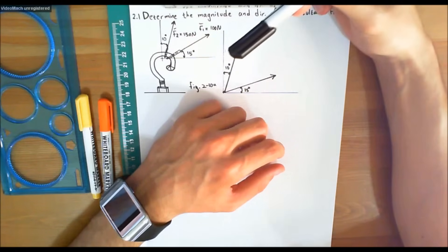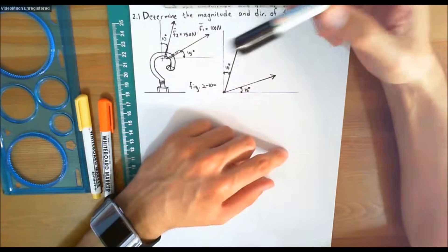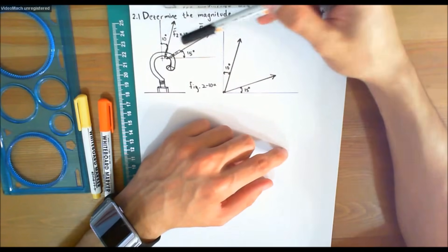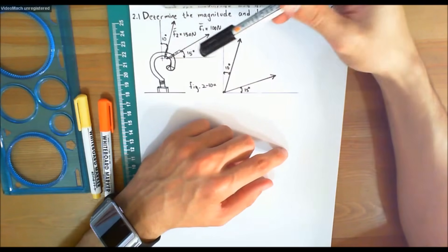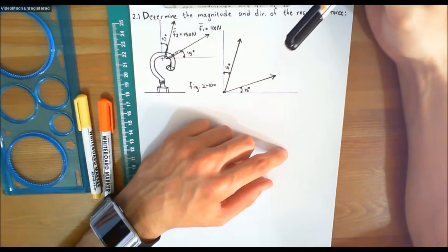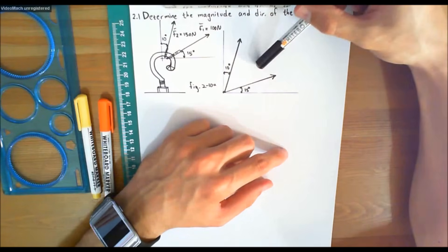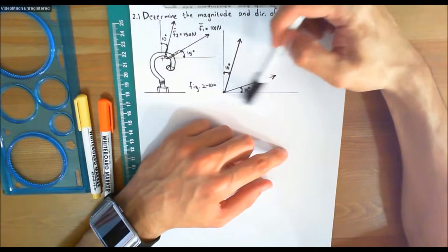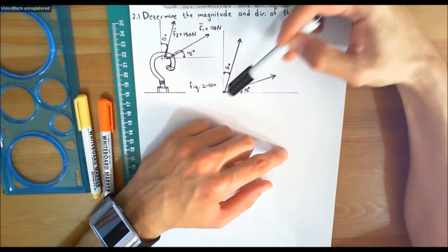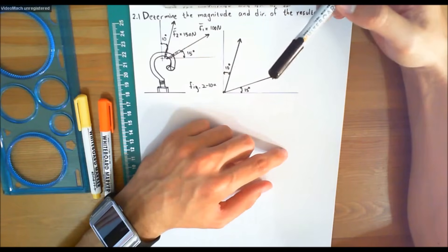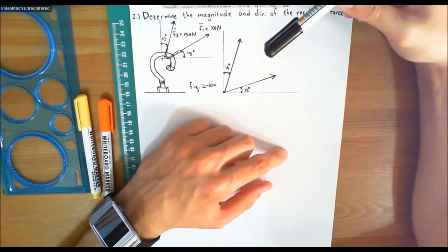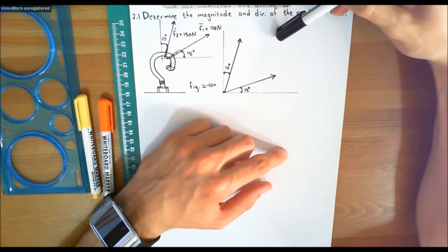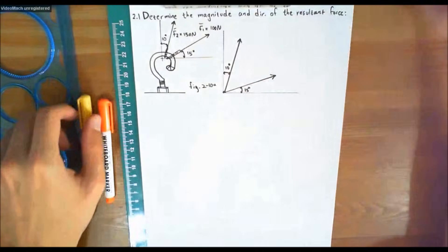Let's start off by using the procedure for analysis. The first step would be to look at the problem and understand the question — he wants us to determine the forces F1 and F2, and to determine the magnitude and direction of the resultant force. The first step in the procedure for analysis is to make a free body diagram showing the vector addition using the parallelogram law. We start by drawing the x-axis and the y-axis, and we draw the two force vectors along with their angles.